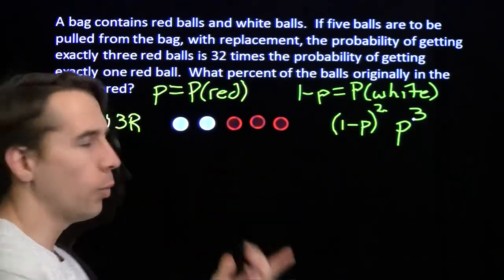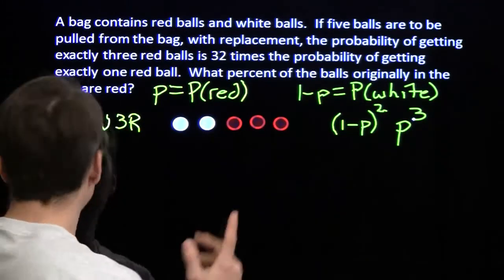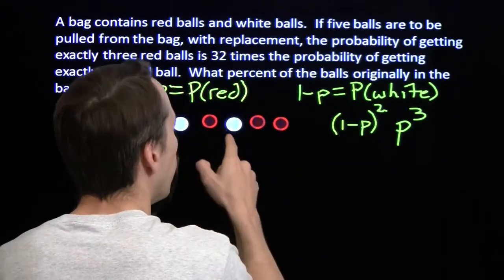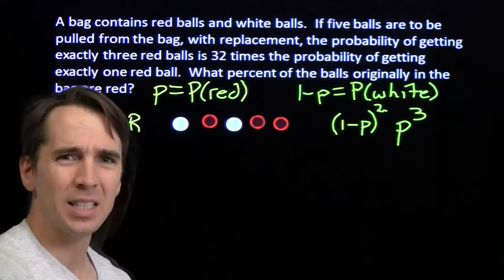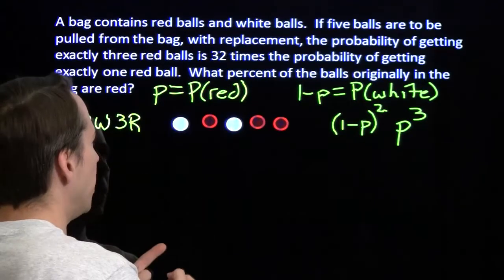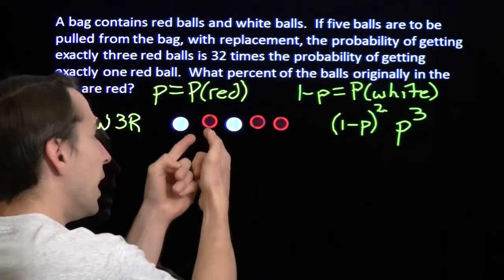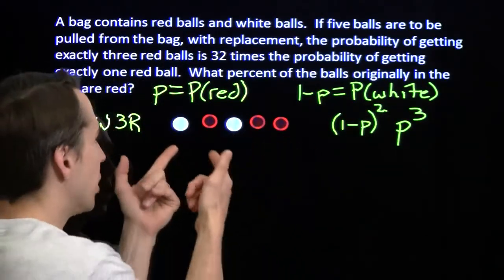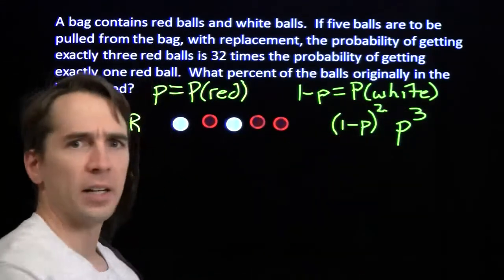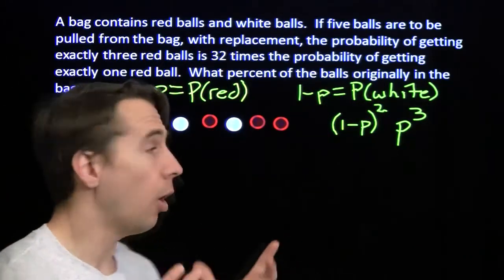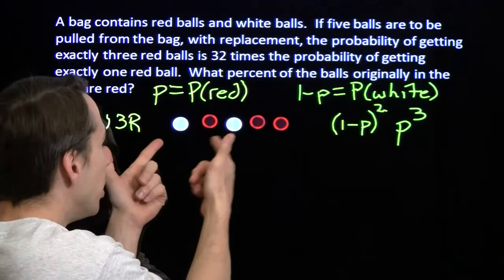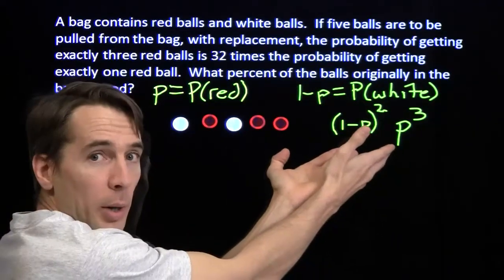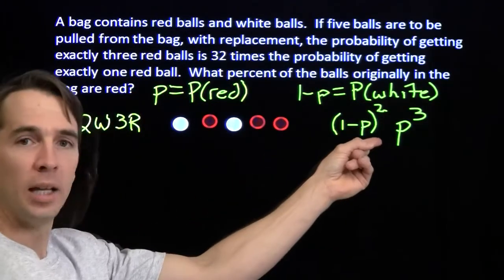This isn't the only way we can have two whites and three reds. For example, we could go white, red, white, red, red. But no matter the order, we'll always have two factors of (1-P) and three factors of P. So to find the total probability of all the ways to get two white and three red, we just count the number of arrangements and multiply that number by (1-P)²·P³.